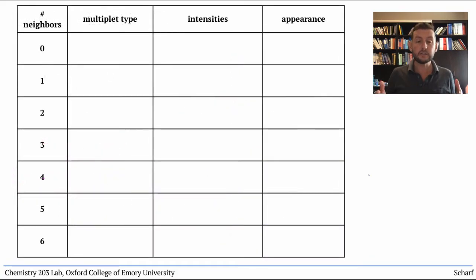To generalize, a particular observed proton gives a multiplet with n plus one peaks, where n is the number of neighboring protons.